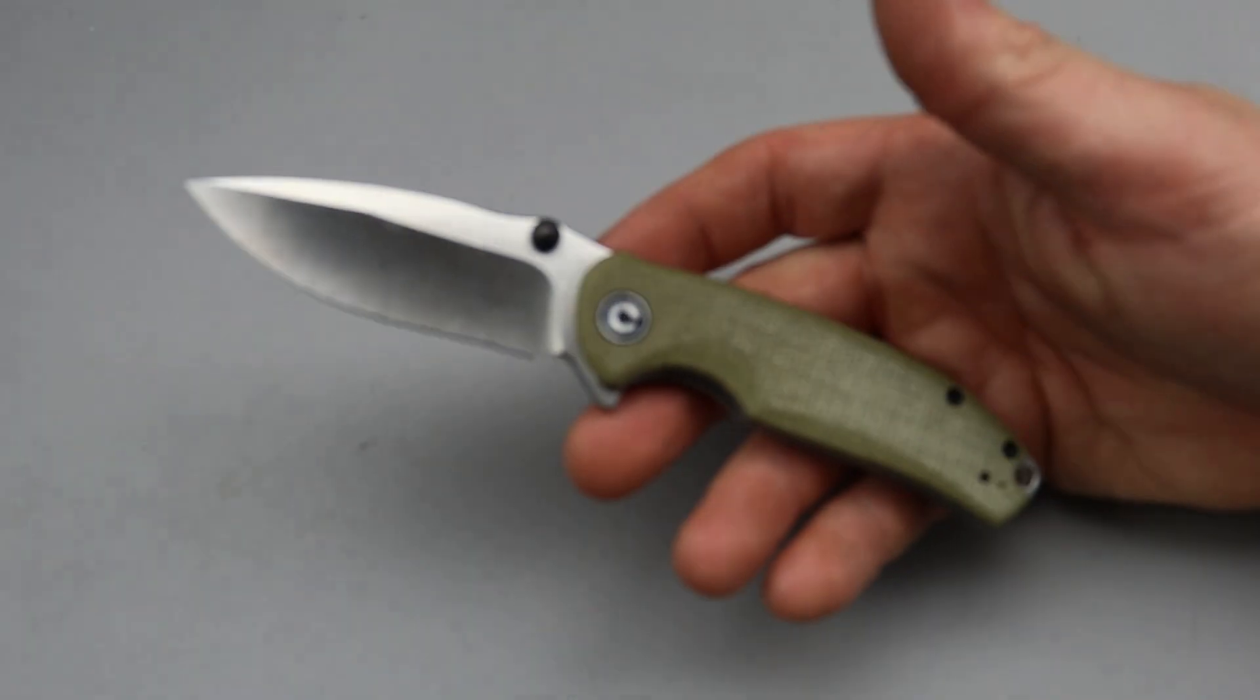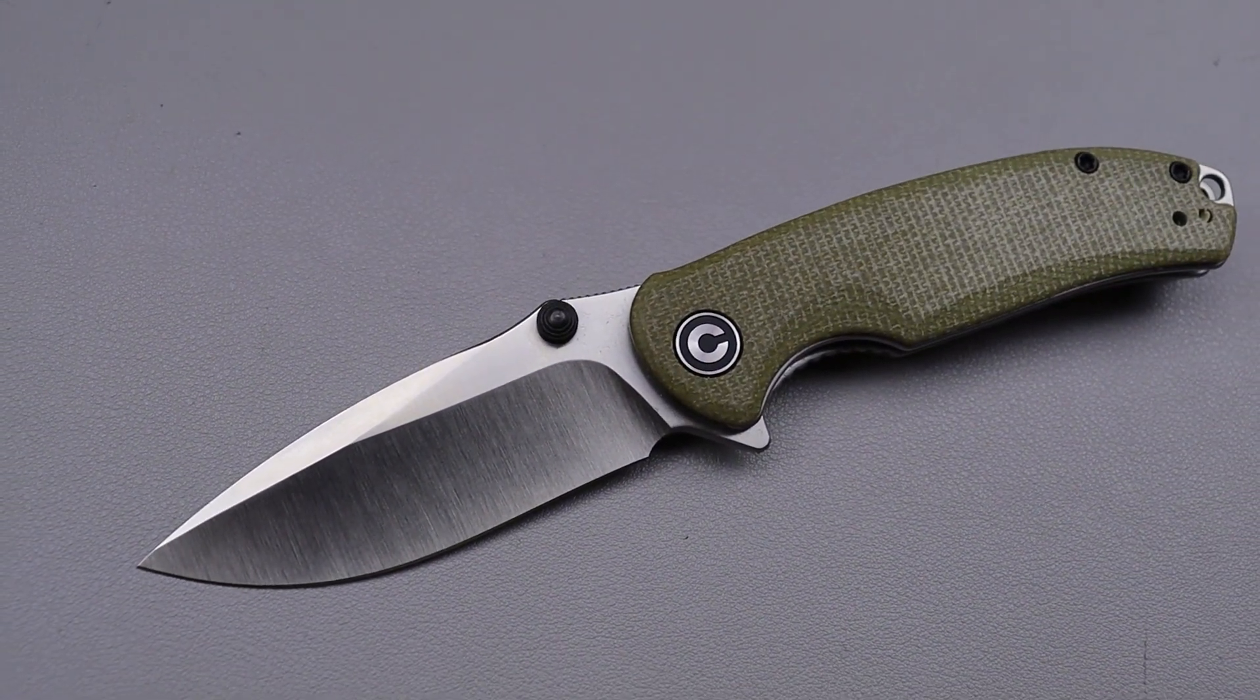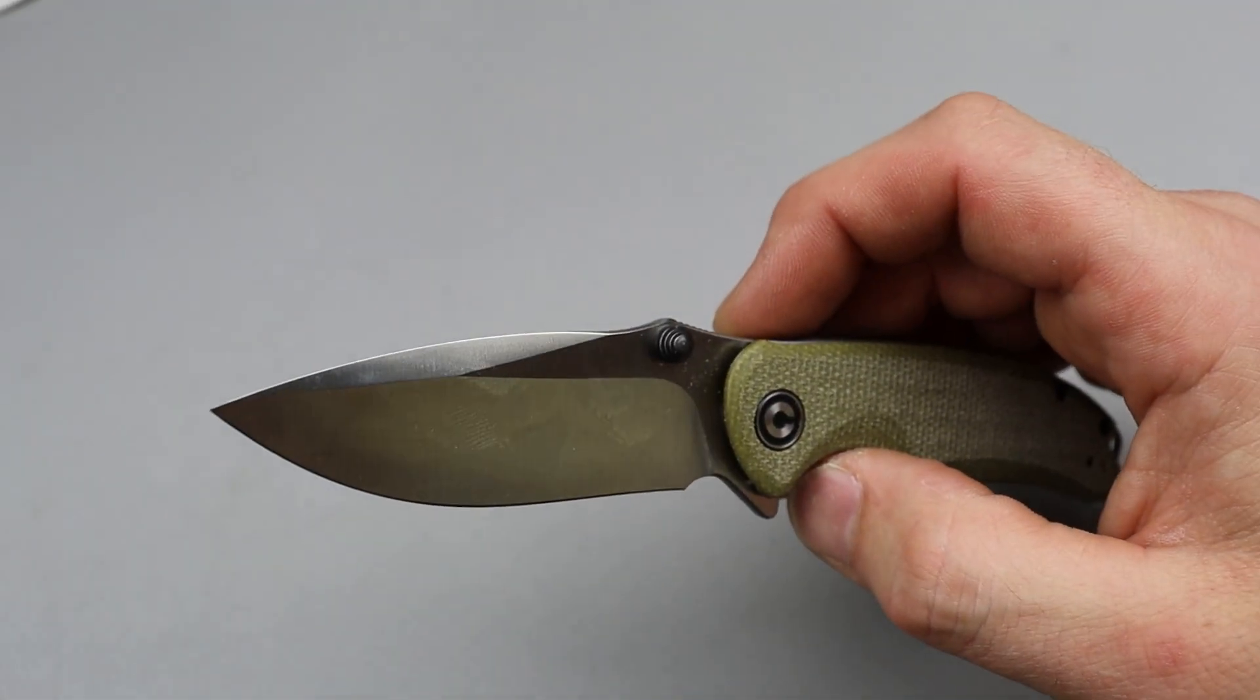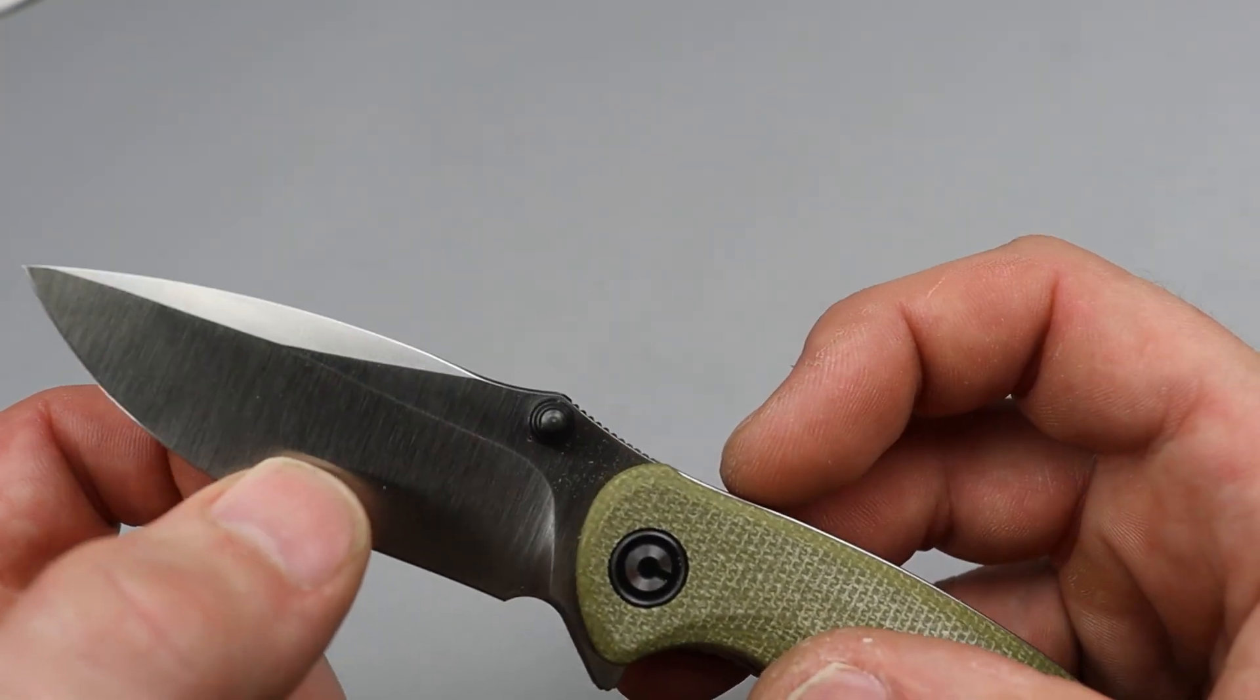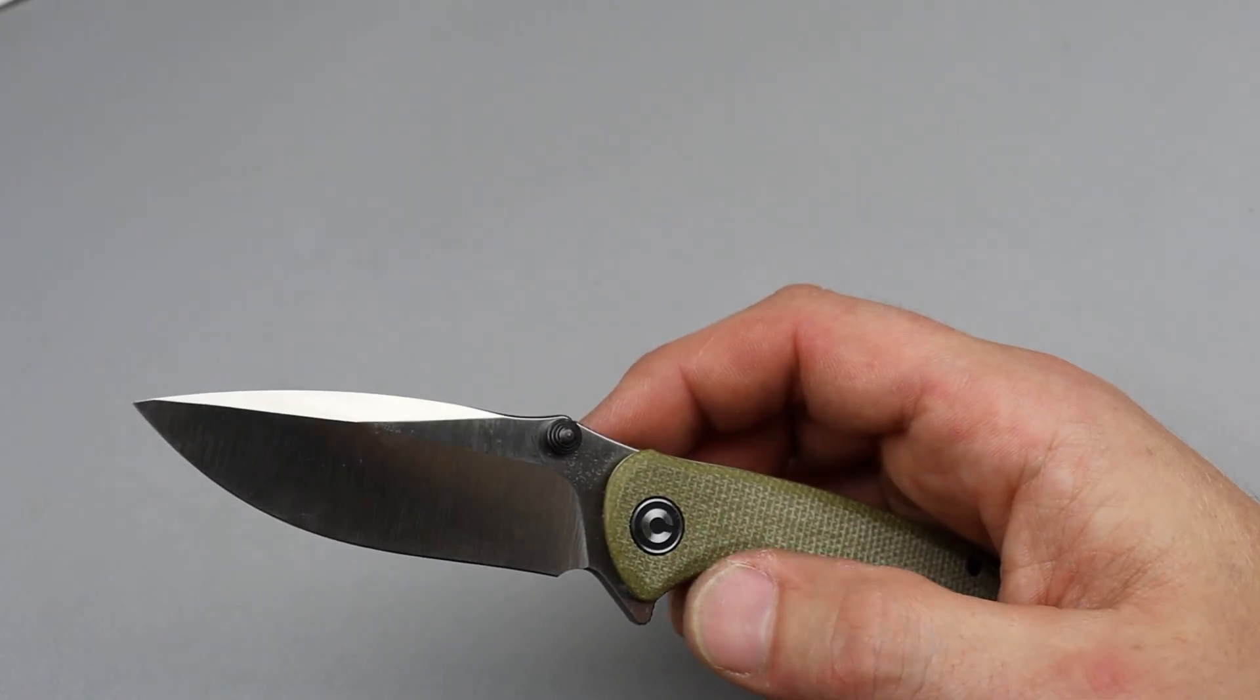Next the Civivi Pintail. This is a nicely priced knife. You get S35VN with a super deep hollow grind. I'm talking about this thing is such a deep hollow grind. If they went any deeper they would have blown through the blade. That's how deep this hollow grind is.